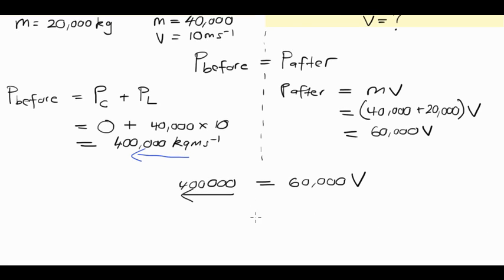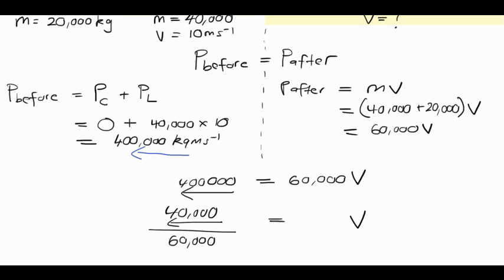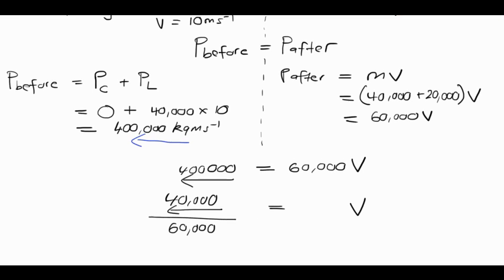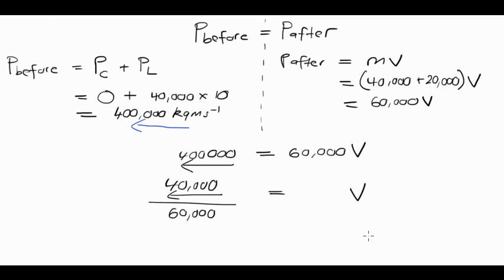Which means that the final velocity, if we rearrange this equation, will be equal to 400,000 to the left divided by 60,000.